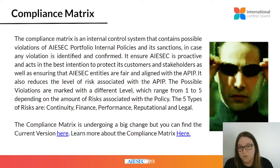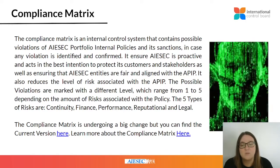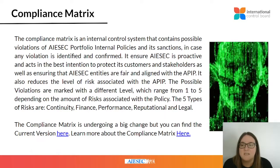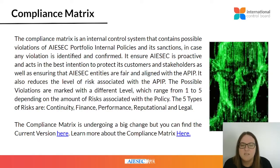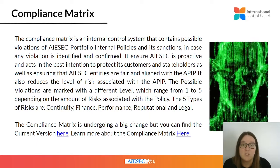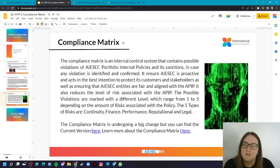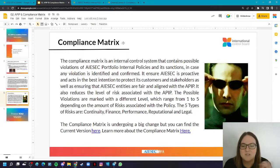Last but not least is the compliance matrix. This is another tool that can help us identify what can actually go wrong — what entities can actually violate in the APIP. Because the APIP is a massive document, the compliance matrix is pretty much like a checklist. It helps you identify issues and we have it categorized in different levels and different risks. There will be more materials on the compliance matrix, as it is the core of audit and compliance — it's our key tool alongside the APIP.